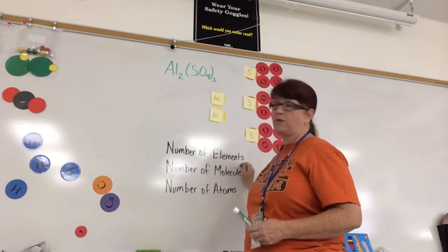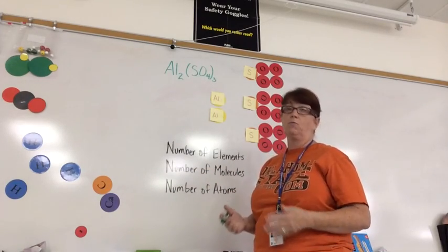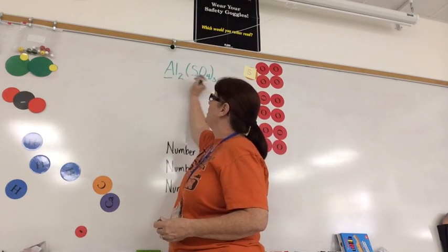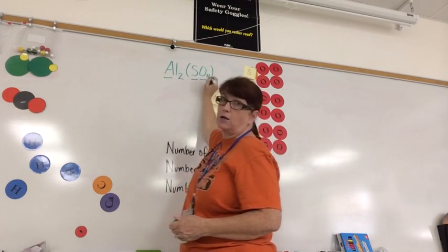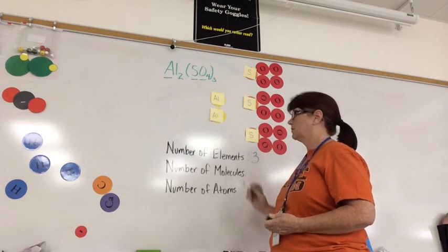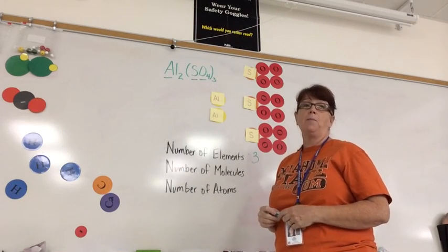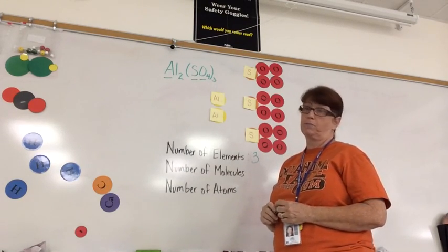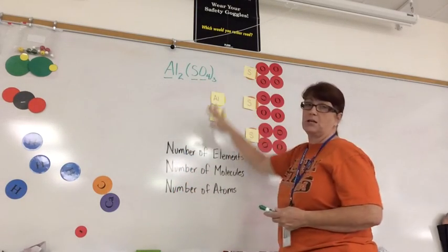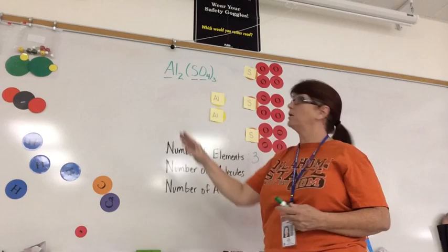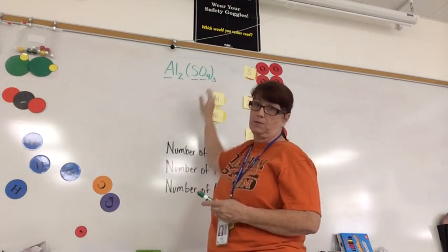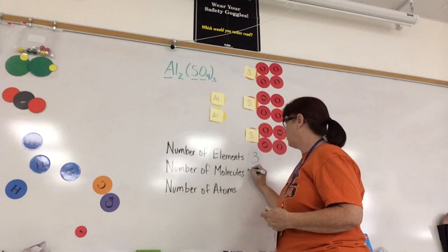First thing we need to do is figure out the number of elements. Again, we look at the number of capital letters. I have an A, an S, and an O. So I have 3 elements. How many molecules? We have no coefficient. So that means all of this put together is one molecule of this substance, Al2(SO4)3.